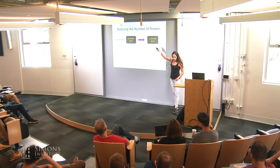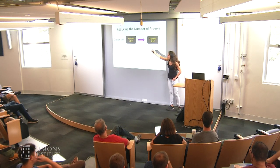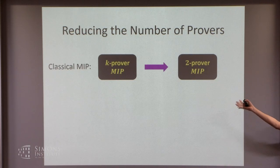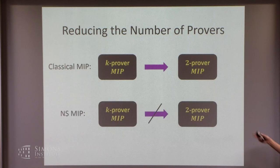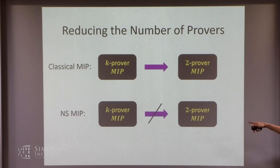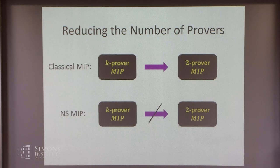Many of you know that in the classical setting, k-prover MIPs can be reduced to 2-prover MIPs — shown in the seminal work that introduced multiprover interactive proofs. However, this does not extend in the no-signaling setting. In the no-signaling setting, looking at k-provers and 2-provers is not the same thing, and we'll see a result to this effect.